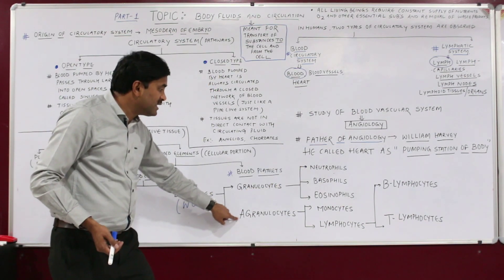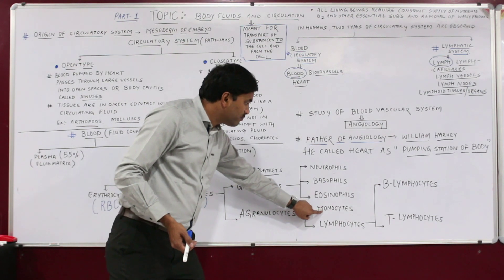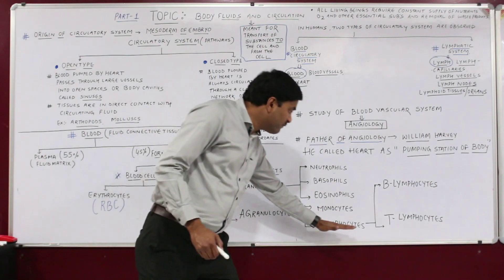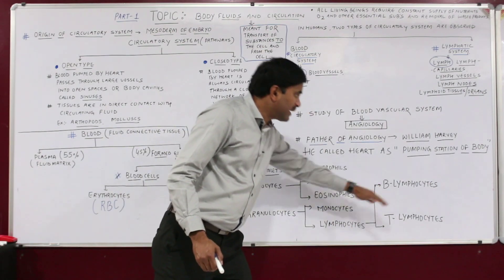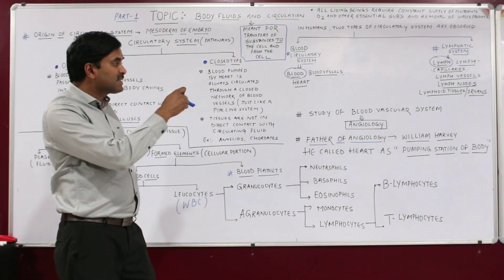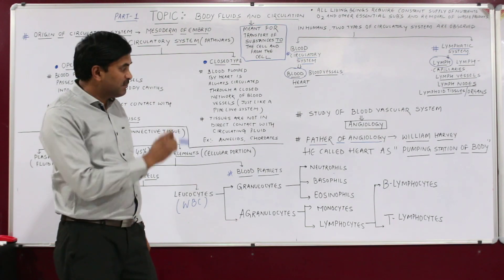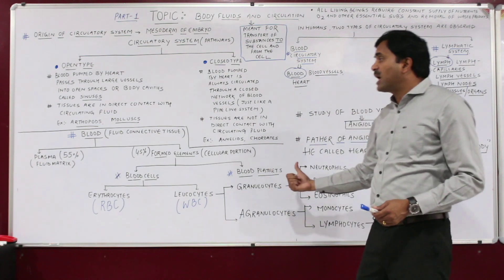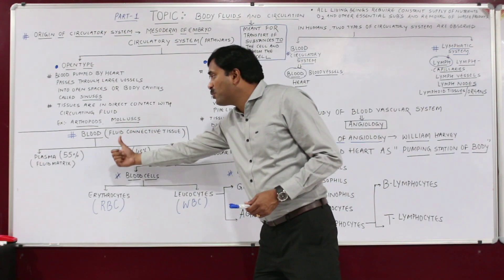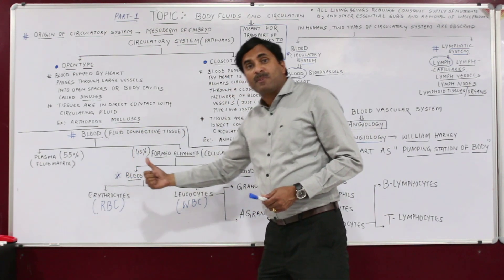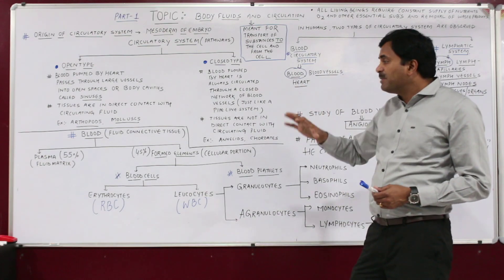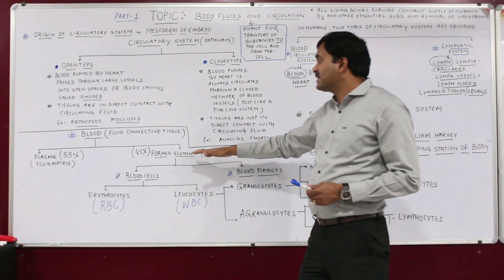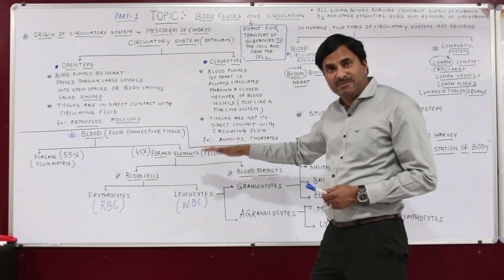Agranulocytes are of two types: monocytes and lymphocytes. Lymphocytes are further of two types: B lymphocytes and T lymphocytes. This is the flowchart of the components of the blood. In the next video, we will discuss in detail the plasma as well as all the formed elements.